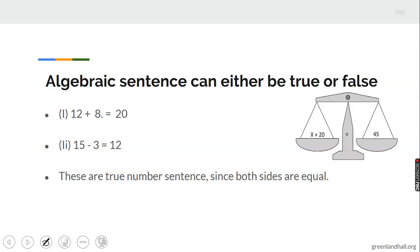Algebraic sentences can either be true or false. In math, when you see something on the left and something on the right, it tells you we have two ends. An equation can either be true or false. Now, 12 plus 8 will it give me 20? Of course that is true. 15 minus 3 will it give me 12? Yes, these are true sentences because both sides are equal.